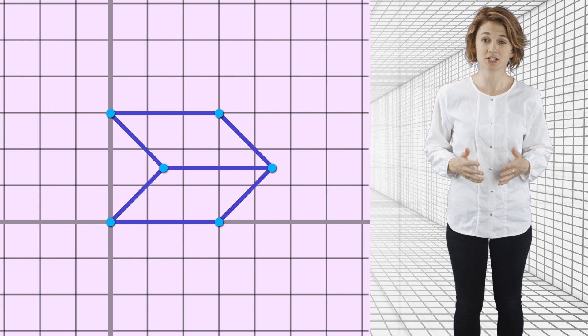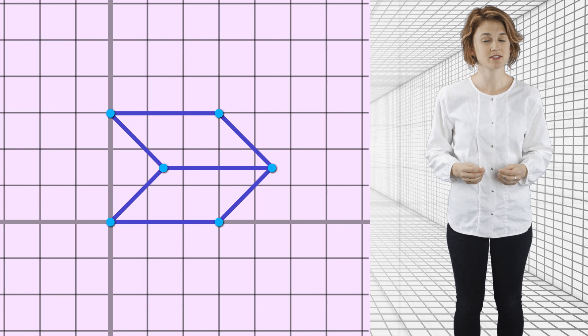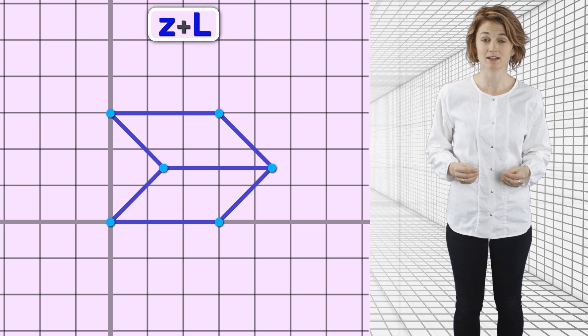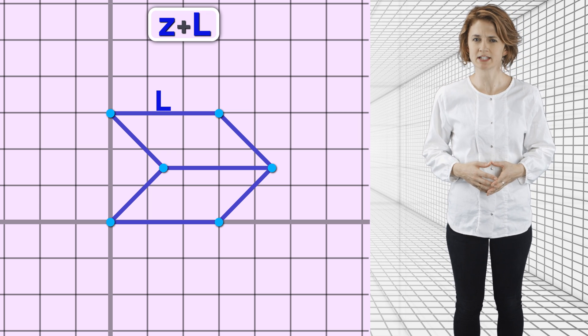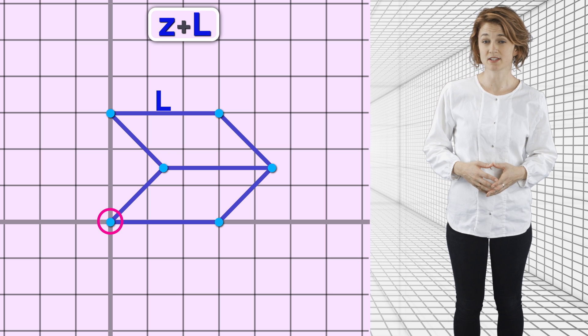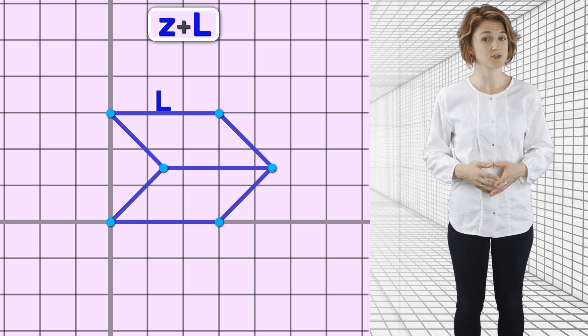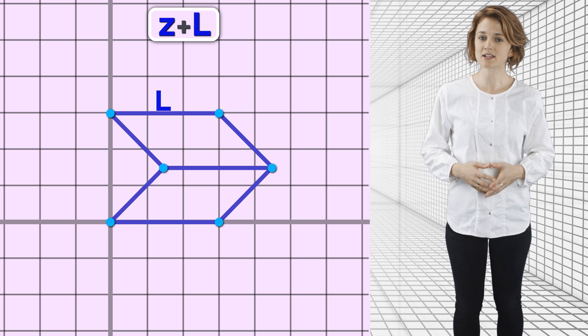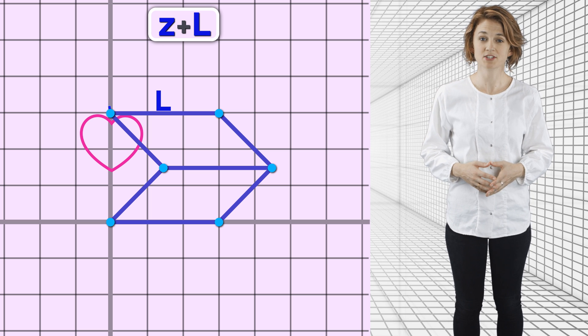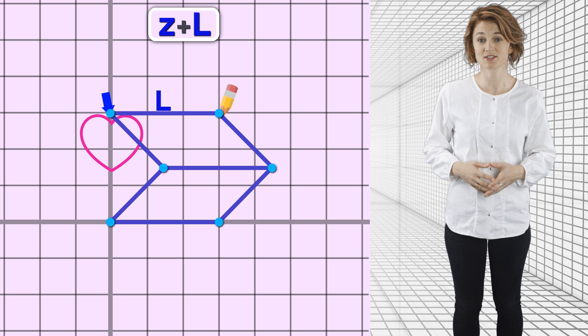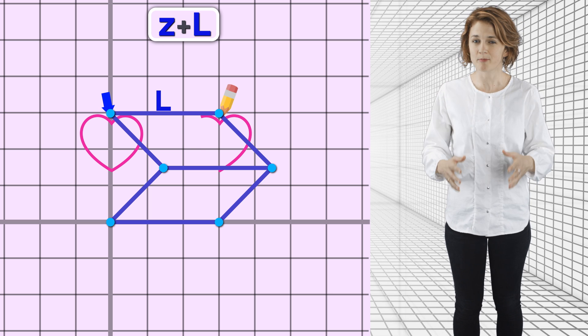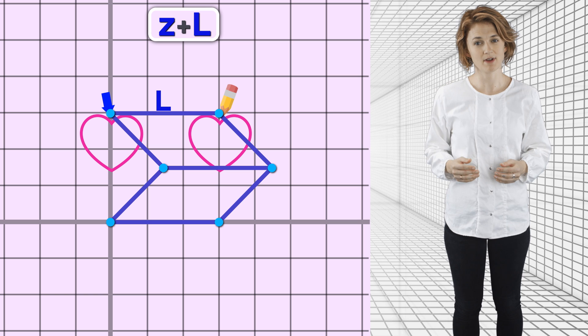Let's build a different linkage, one that corresponds to a different complex function. This is the translation linkage. It corresponds to the function z plus l, where l is the length of this edge. Remember the general setup of a linkage. This vertex is fixed at the origin, and the other vertices are free to move. But their edge lengths are fixed. In this case, if we trace a shape with this vertex and place a pencil at this vertex, it will draw an exact copy of the original shape, but l units to the right.